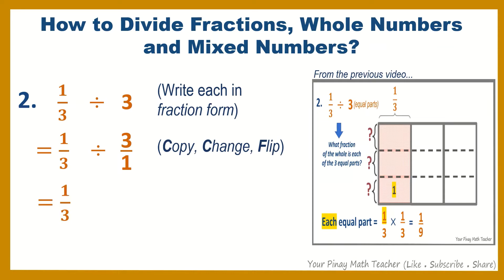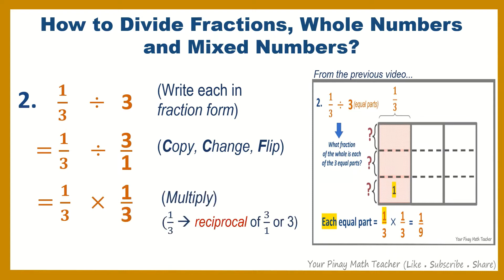Copy 1 third, then change to times, and flip 3 over 1 to 1 third. Then you multiply. 1 third is called the reciprocal of 3 over 1, or 3. Since nothing can be reduced, multiply both numerators to get 1, and both denominators to get 9. So the final answer is 1 ninth.